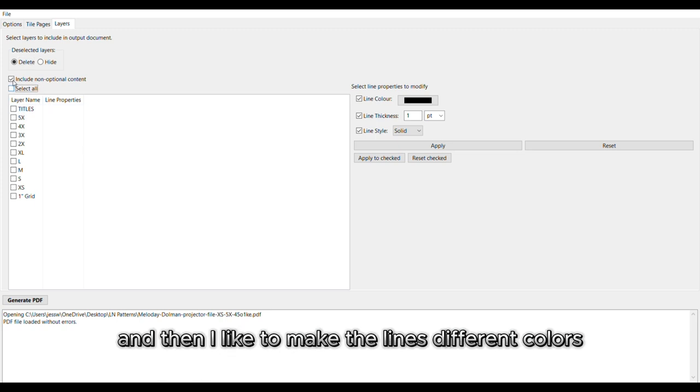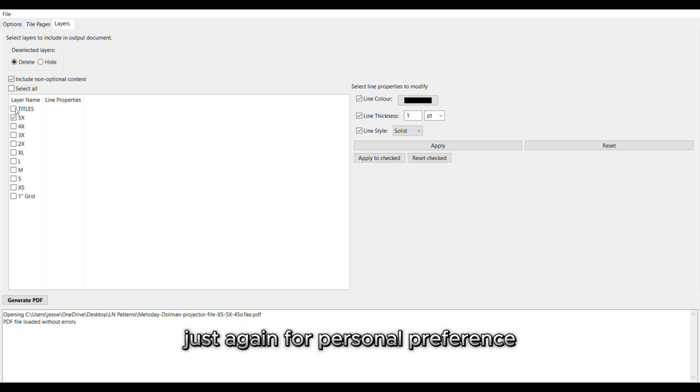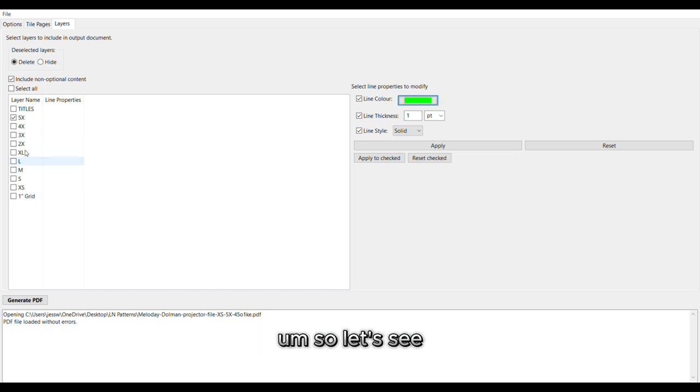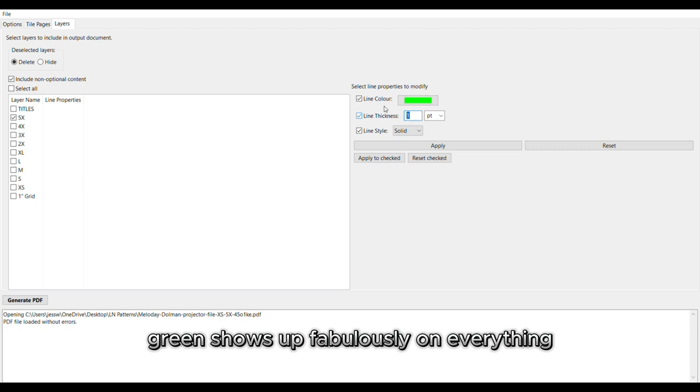So we're going to turn off all of those other sizes. And then I like to make the lines different colors and also thicken them up, just for personal preference so that I can see things more easily so that when I'm cutting, I can make the cleanest cuts possible. So I'm going to go over here. Black rarely is the best color for me to use.